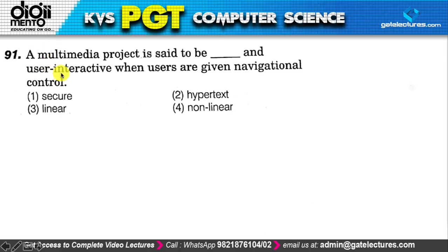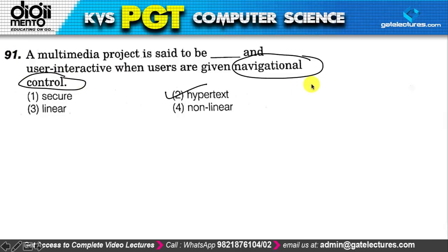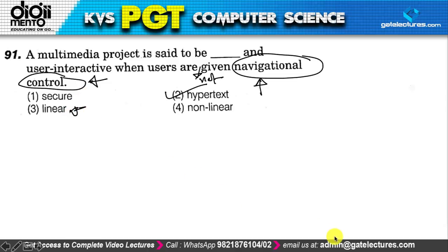Question 91: a multimedia project is said to be end-user interactive when users are given navigational control — this is called hypertext. When you click on hypertext it redirects to another page. If users are NOT given navigational control, the answer would be 'linear'. So the correct answer is option 2, which is hypertext.